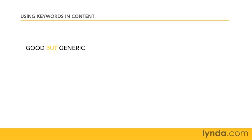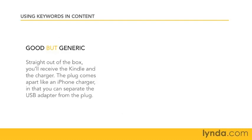Here's another example of good but generic content. A paragraph from the Kindle site says: 'Straight out of the box you'll receive the Kindle' — but what kind of Kindle? — 'itself and the charger' — but what kind of charger? — 'the plug comes apart like an iPhone charger in that you can separate the USB adapter from the plug' — again, just generic words.